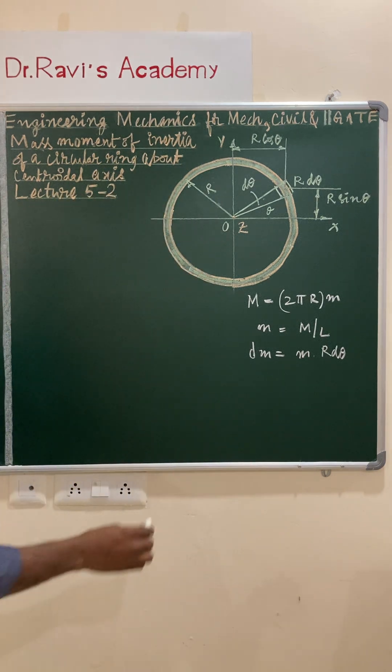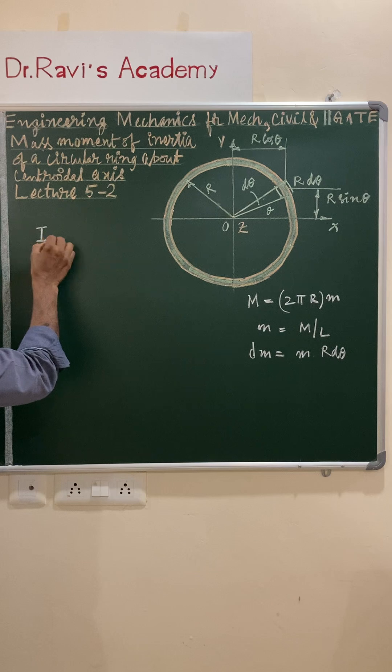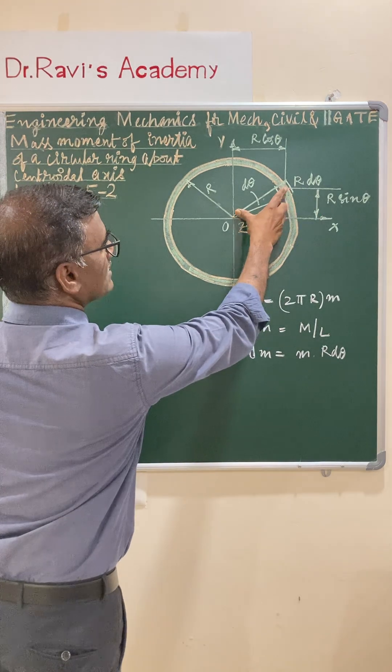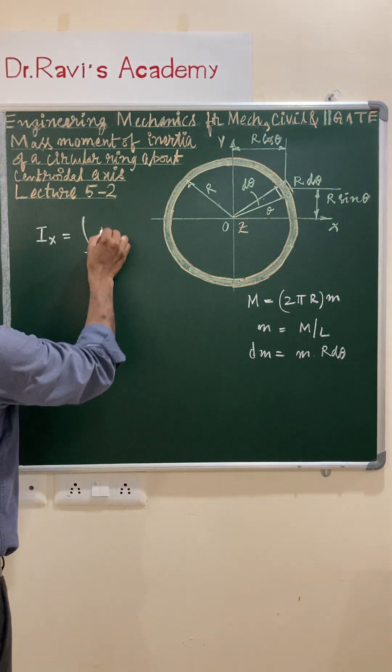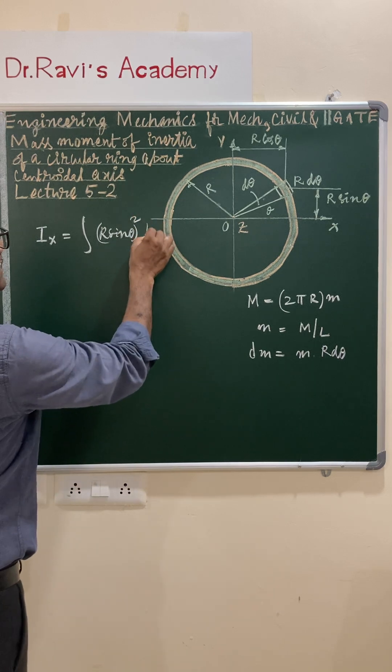Write down the expression for mass moment of inertia about x-axis. Ix is equal to—the distance is r sin theta. So, integral r sin theta whole square, that is distance squared into dm.